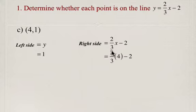We end up with 2/3 times 4. If you recall, we can think of 4 as 4 over 1, so we multiply 4 by our numerator, which gives us 8, and keep the denominator 3. So we end up with 8/3 minus 2. So 2/3 times 4 is 8/3.